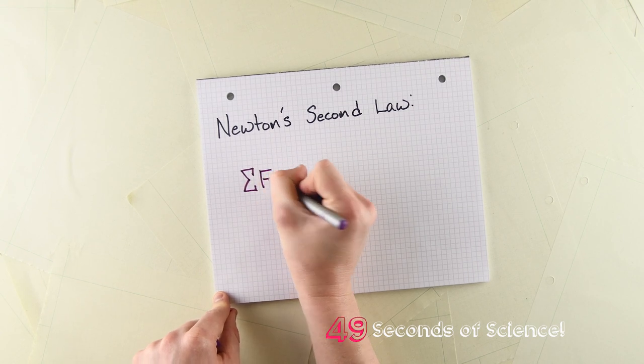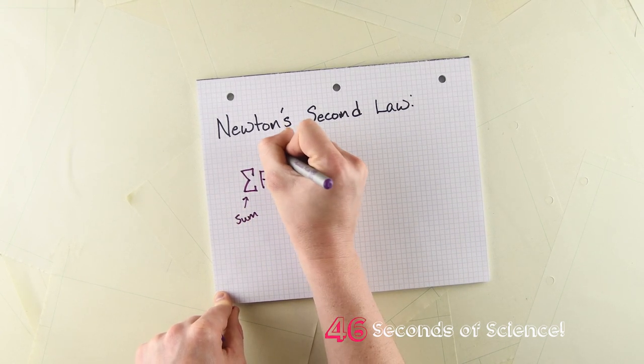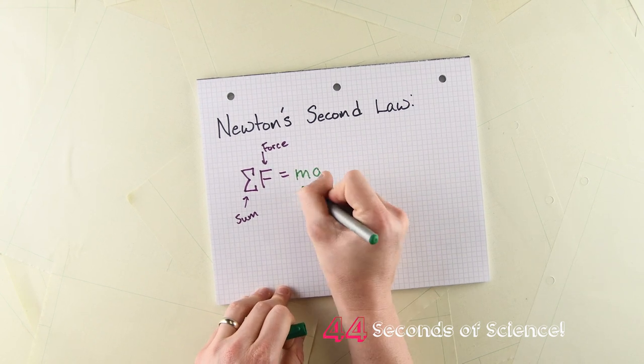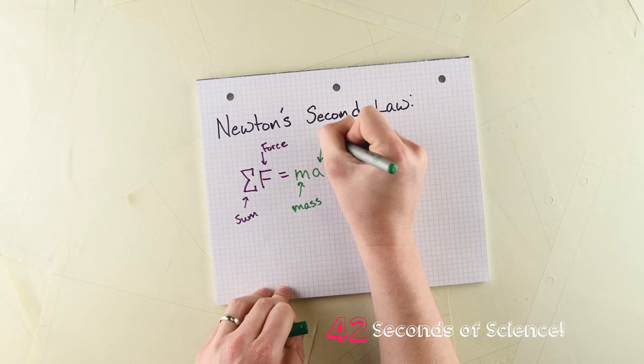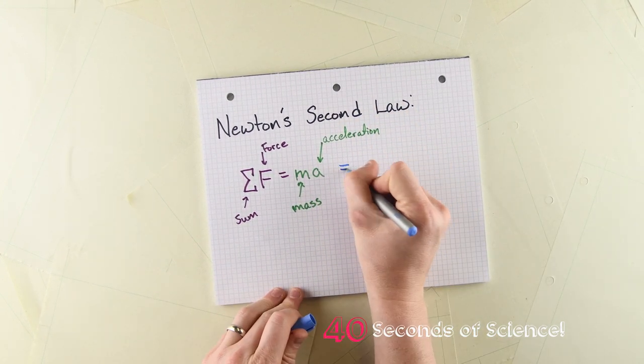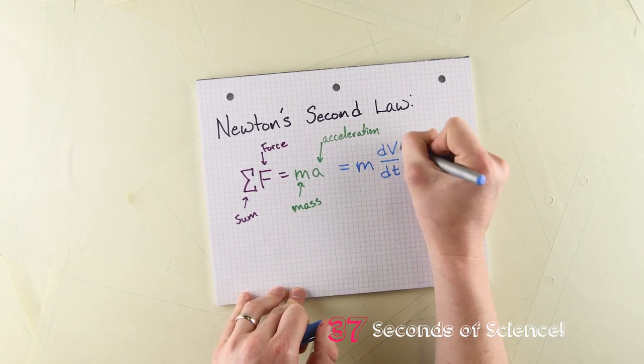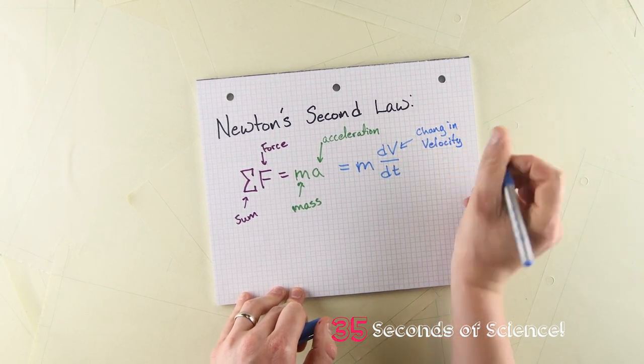Well, mathematically Newton's second law says that the sum of the forces acting on an object in motion is equal to the object's mass multiplied by its acceleration, where acceleration is how an object's velocity changes over time, so whether it gets faster or slower.